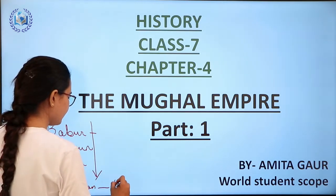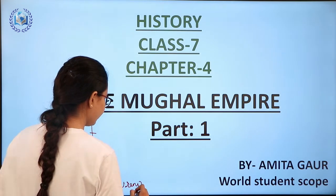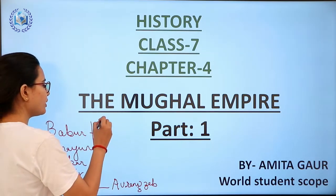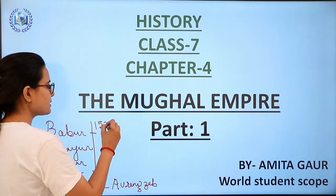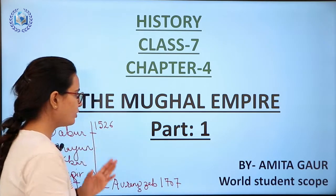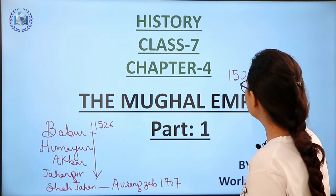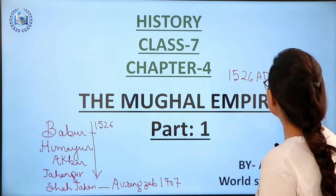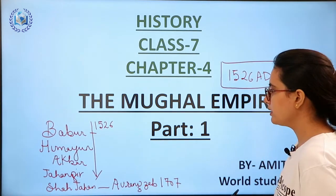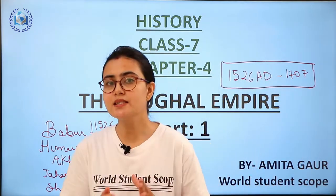The major rulers of Mughal dynasty are: Shah Jahan, then Aurangzeb. We usually say that the Mughal Empire started in 1526, and up to Aurangzeb's period it was 1707. So roughly, the history we will cover in this chapter is from 1526 AD to 1707 — until the death of Aurangzeb.